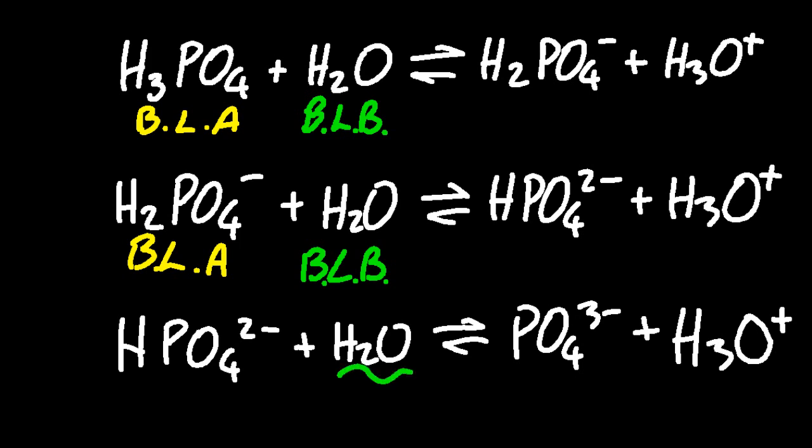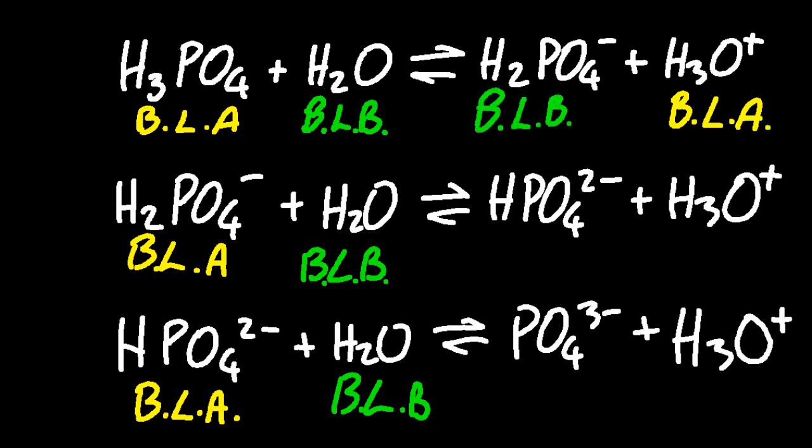And let's look at the water this time. Well, the water's gaining an H+. So again, it is the Bronsted-Lowry base. Now those double-ended arrows are equilibrium, so we can look the opposite direction. So in the reverse reaction, the hydronium ion is behaving like the acid, and the H2PO4- ion is behaving like a base in the reverse reaction.